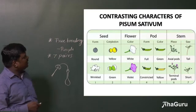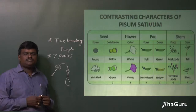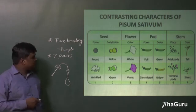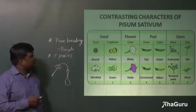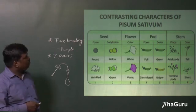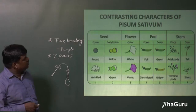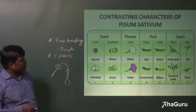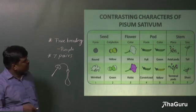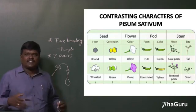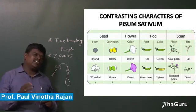The seven pairs of contrasting characteristics observed in Pisum sativum are: seed shape — round or wrinkled; cotyledon color — yellow or green; flower color — white or violet/purple; pod shape — full or constricted; pod color — green or yellow; flower position on stem — axial or terminal (axial means on the side, terminal means at the tip); and plant height — tall or short/dwarf. These are the seven pairs of contrasting characteristics, which is one of the reasons why Mendel selected Pisum sativum for his experiment.